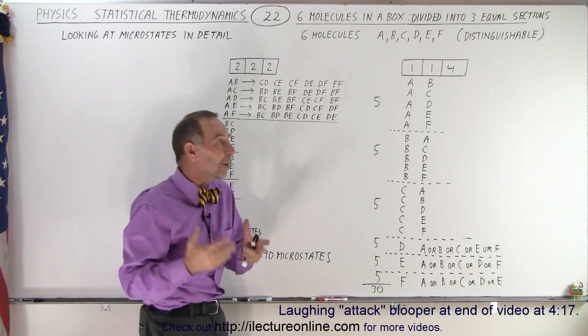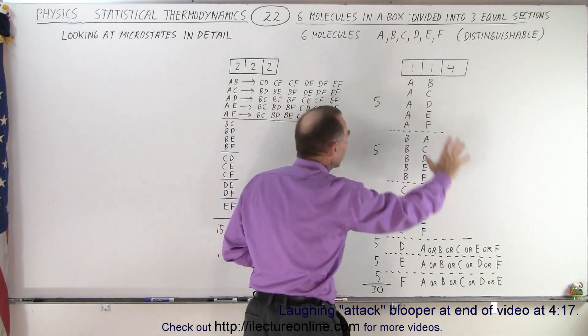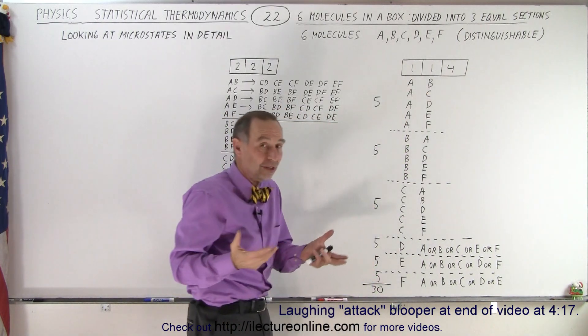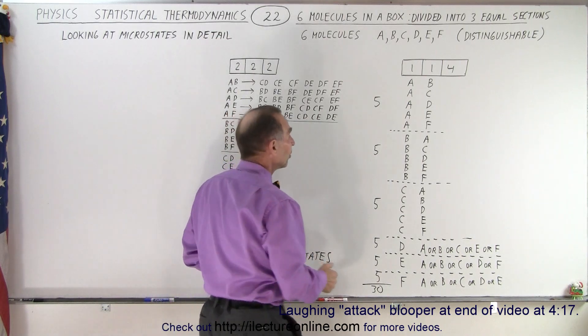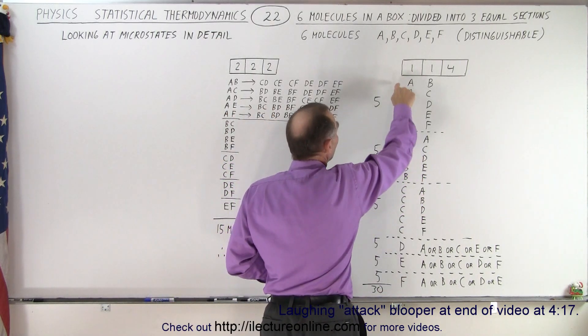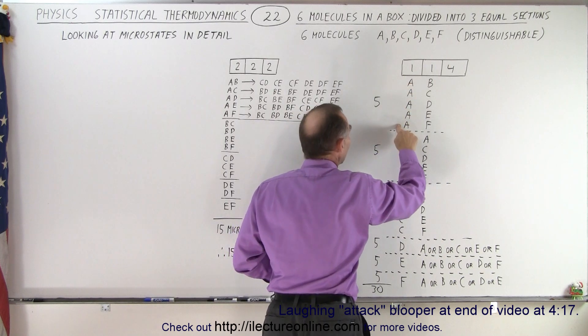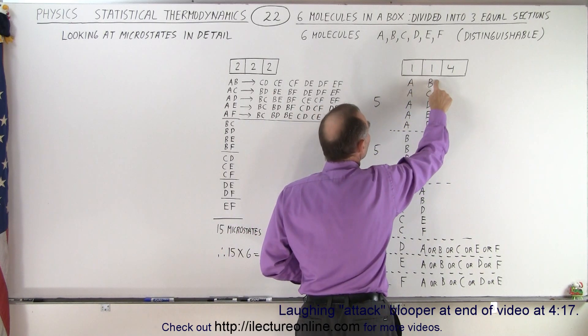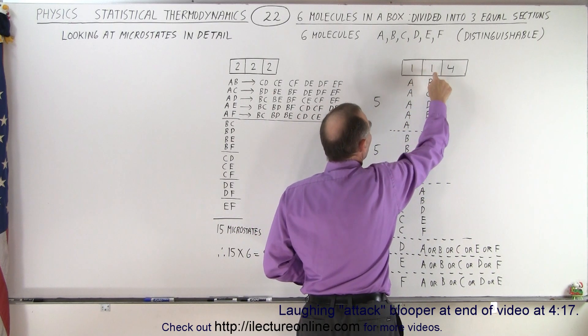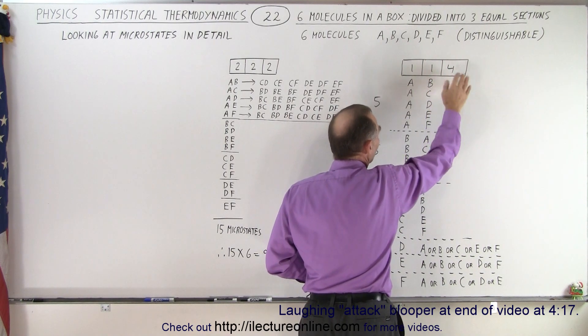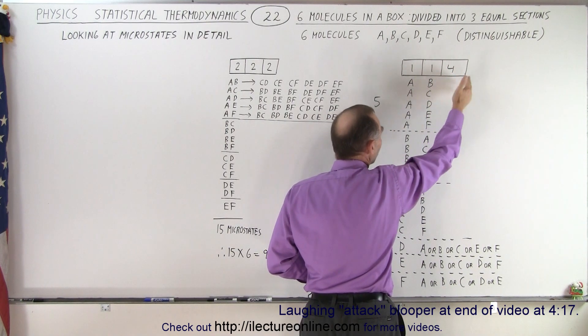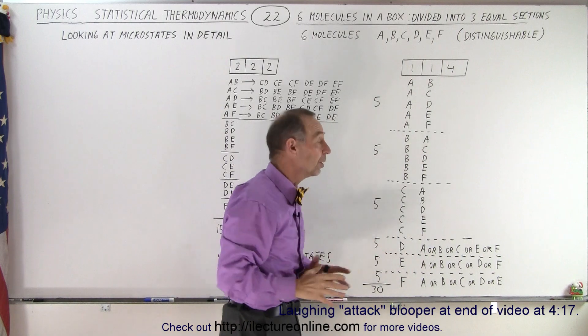How many different ways can we arrange the molecules like this which represents the number of microstates? So let's take a look at our left side of the box. We can put molecule A in the left side which leaves five possibilities for a molecule in the middle box. And of course the other four on the right will be whatever is left of the six molecules.